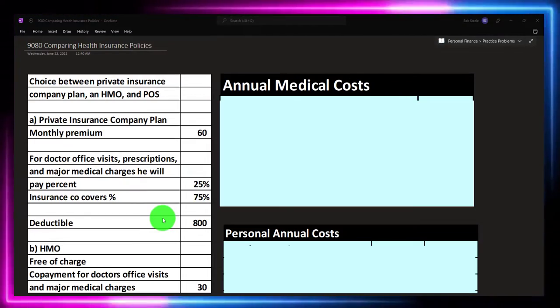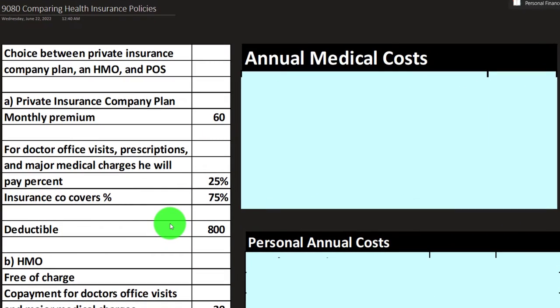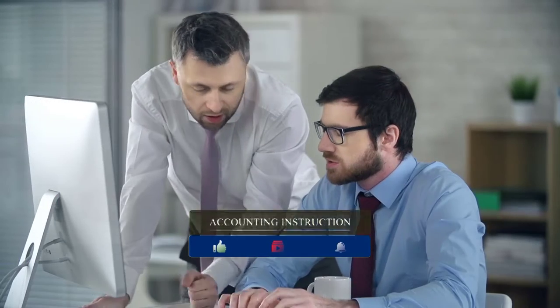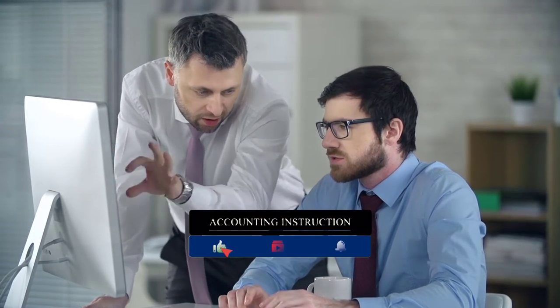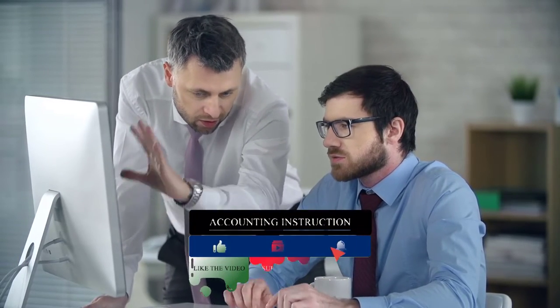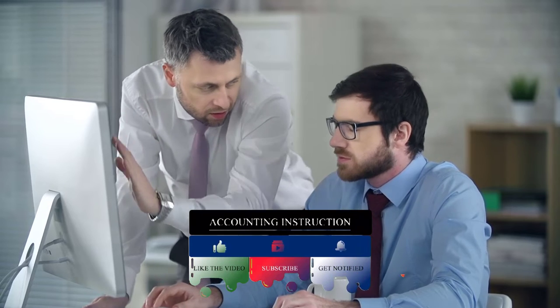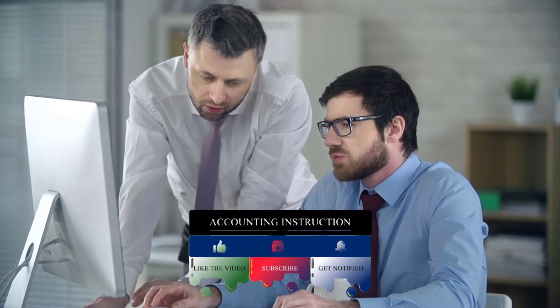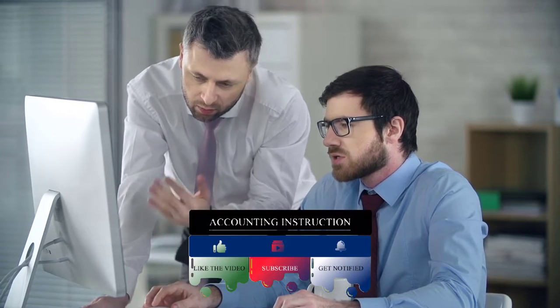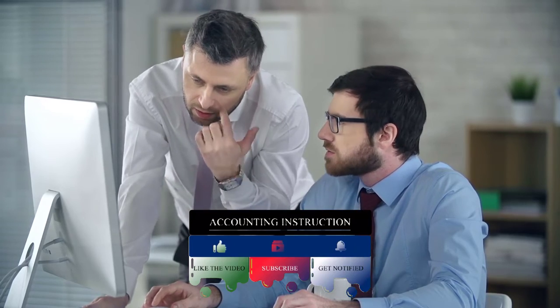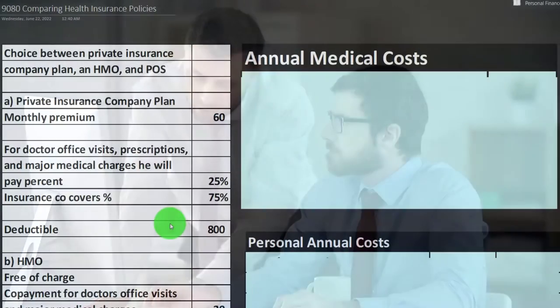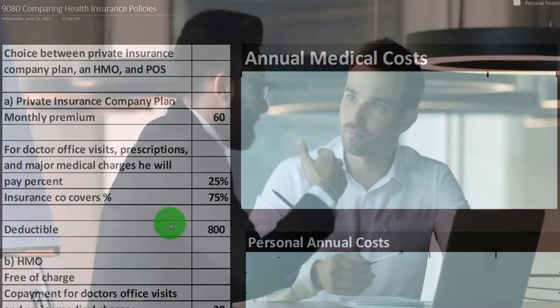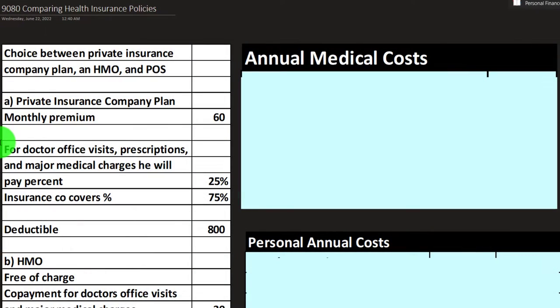We are imagining an employee who works for an employer that offers three different options for medical insurance plans. We're going to be running a comparison based on prior medical costs. Note that in practice, this would not be the only thing we'd want to rely on to make a decision — we might also want to look at the flexibility of the network, for example. But this is one factor to take into consideration.